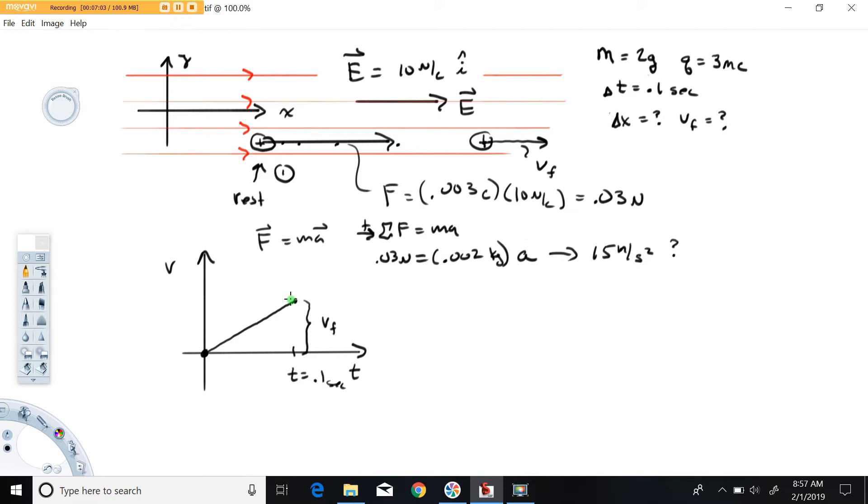The question is what do we do with this graph? Well, we use concepts of slope and area. Let's start with slope. Remember, acceleration is equal to change in velocity over change in time. The acceleration we know is 15 meters per second per second.